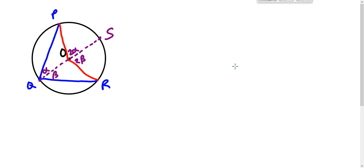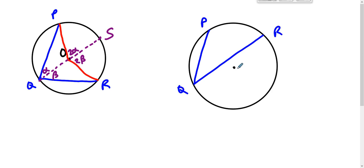Case three says: what if O is in the exterior of angle PQR? What if O is sitting over here? How do we show that the central angle is twice as big in measure as the inscribed angle?